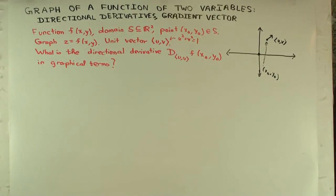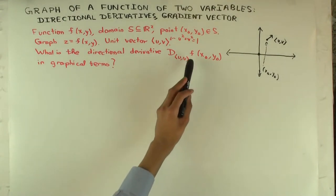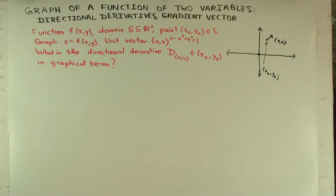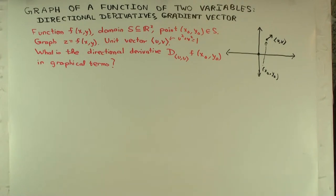So what is the directional derivative in the direction of (u,v) of the function f at the point (x₀, y₀) in graphical terms? Well, we've already hinted at this if you've seen the video on partial derivatives in graphical terms. What did we do to get the partial derivatives? We took the graph and intersected it with x = x₀ or y = y₀. If you are taking the x derivative, you intersect it with y = y₀, and if you are taking the y derivative, you intersect with x = x₀. Basically, we intersected with a plane, then looked at the graph of a function of one variable in that plane, and then took the ordinary derivative, which is just the slope of the tangent line. We have to do something similar here.